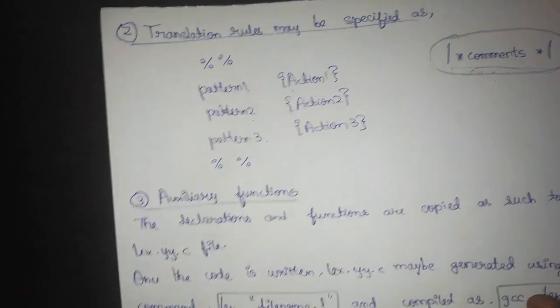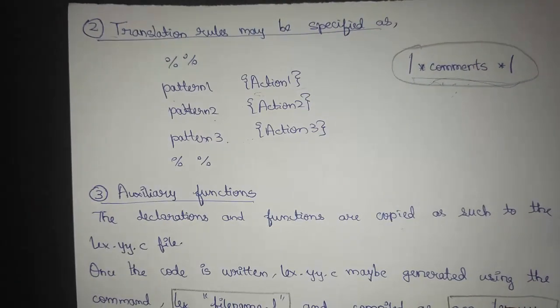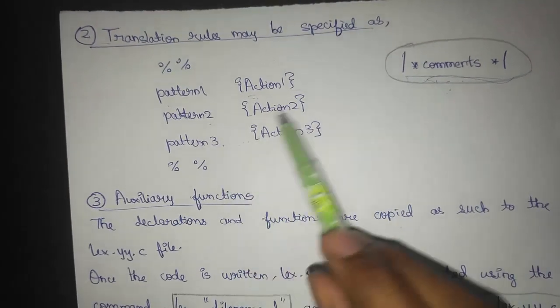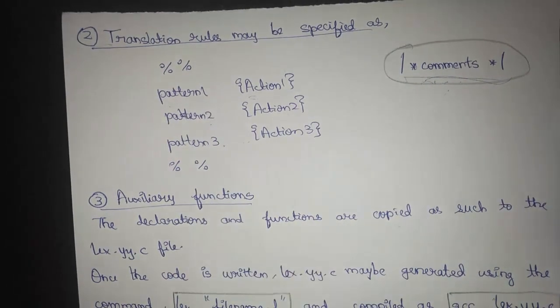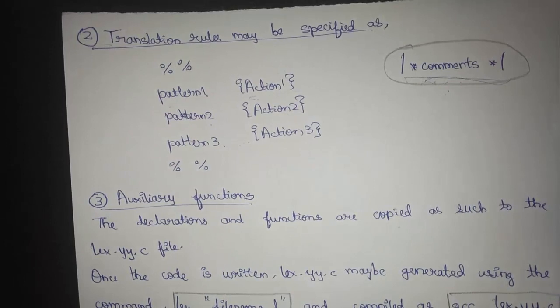The translation section would be having some translation rules being specified which might be depicted as pattern one action, pattern two action, pattern three action. Pattern one is nothing but a particular string.